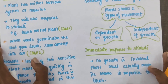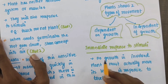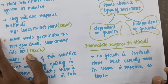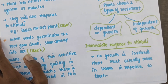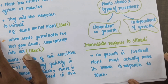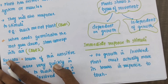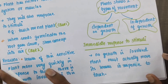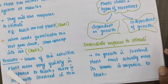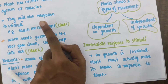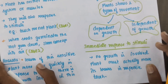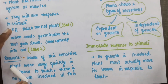First, in nastic movement there is an immediate response to the stimuli and no growth is involved. There will be external stimuli involved, and the plant must actually move its leaves in response to the touch. If there is no growth involved, it is a nastic movement.